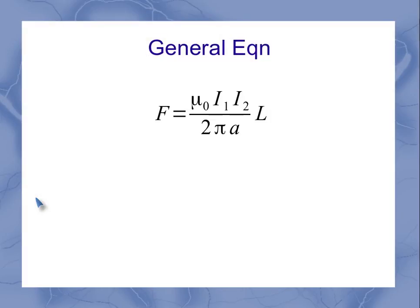So in general, the force on either one of the wires in a parallel wire pair depends on the current in each one of the wires. It depends on the separation between the wires and the length of the wire.